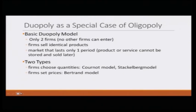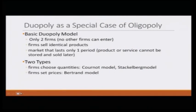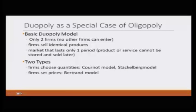Now, we are going to talk about duopoly briefly. Duopoly is nothing but a special case of oligopoly in which we have only two firms. The basic model we have been discussing is that there are only two firms and the firms sell identical products. Notice that need not always be the case — even coke and pepsi sell somewhat similar but not exactly the same product. We also assume that the market lasts only one period, and the products or services produced by the firms cannot be stored and sold later.